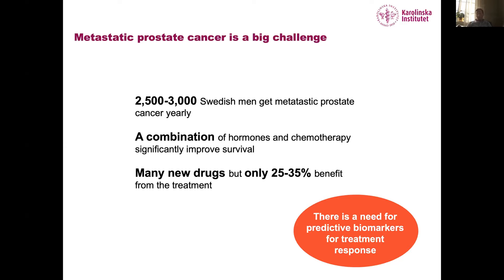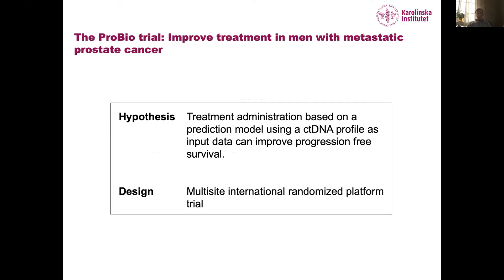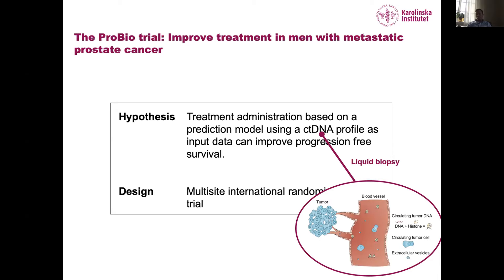There is a need for predictive biomarkers for treatment selection. We started the PROBIO trial with the hypothesis that matching the right treatment to the right patient based on genomic profiling of the tumor can improve progression-free survival. We test this in a multi-center international randomized platform trial using liquid biopsy — a blood draw allows us to amplify tumor DNA from the bloodstream, categorize the tumor by its mutational landscape, and assign different treatments accordingly.